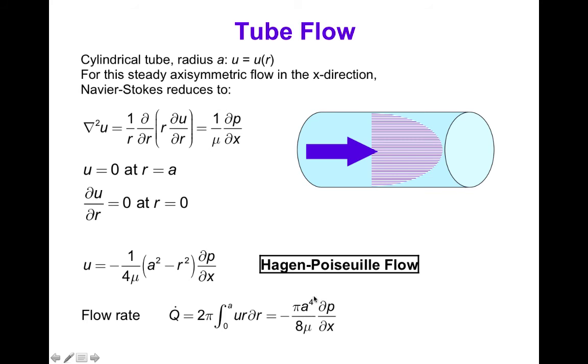And you can see that there's a fourth order dependence on the radius of the tube and an inverse proportion to the viscosity. So the higher the viscosity for a given pressure gradient, the lower the flow. The higher the radius, the higher the flow, and that increases according to the fourth power.